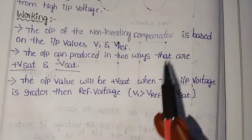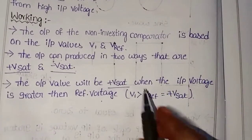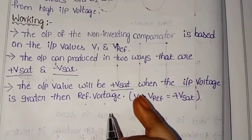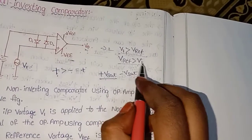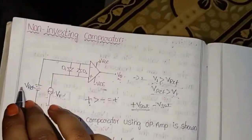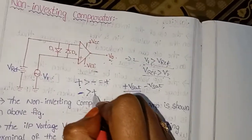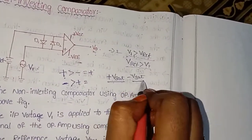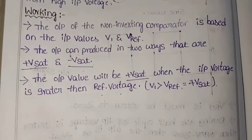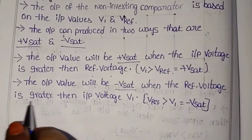The output value will be positive saturation when the input voltage V1 is greater than the reference voltage. This produces positive saturation. Second condition: when V-reference is greater than V1, negative saturation is produced. The output value will be negative saturation when the reference voltage is greater than the input voltage V1.